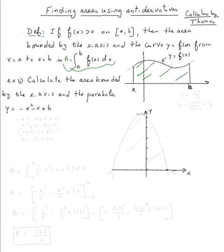So let's do this problem. Calculate the area bounded by the x-axis and the parabola y = -x² - x + 6. So first let's graph it. What's the easiest way to graph a parabola? You can use your calculator. If not, the vertex will be x = -b/(2a).